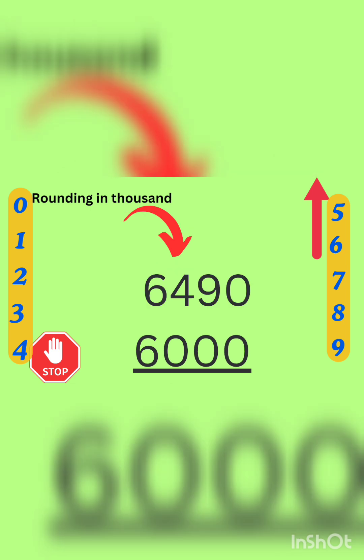This example is about rounding in thousands. When we want to round in thousands, we will see what is given in hundreds place. It's 4. Since it's 4, we will write 6000 instead of 7000.